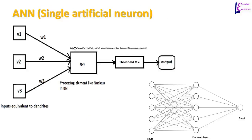This is a diagram of a simple artificial neuron with inputs v1, v2, and v3, and weights w1, w2, and w3. Inputs are like dendrites in a biological neuron. In a biological neuron, processing takes place in the body of the neuron, whereas in an artificial neuron, computations are performed in processing elements. A value is computed based on the weights or importance of information and that value is compared to the threshold to determine whether the output should be high or low.